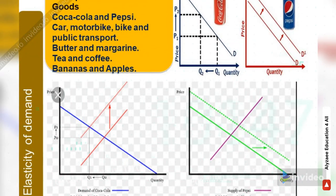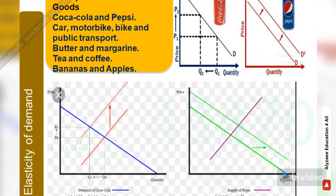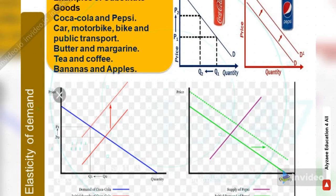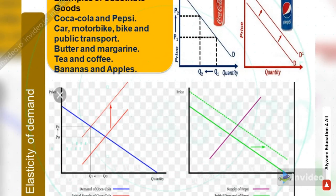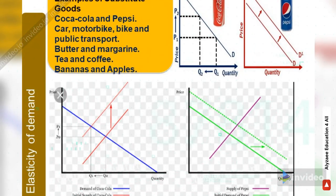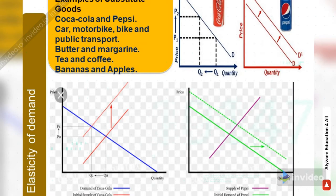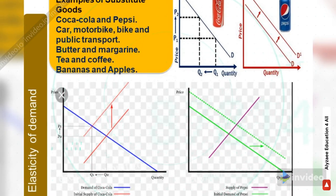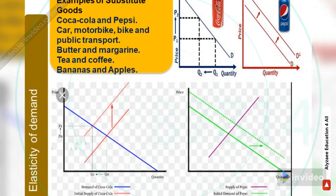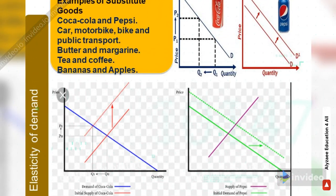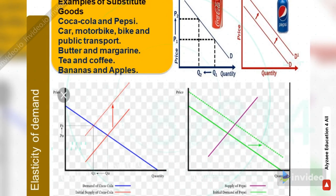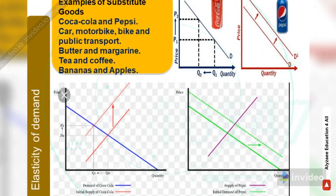I've brought pictures and graphical representations to better understand substitutes. Examples of substitute goods are Coca-Cola and Pepsi, car and motorbike, bike and public transport, butter and margarine, tea and coffee, and even fruits like bananas and apples. They are substitutes for each other — when one item's price goes up, you substitute to the other.